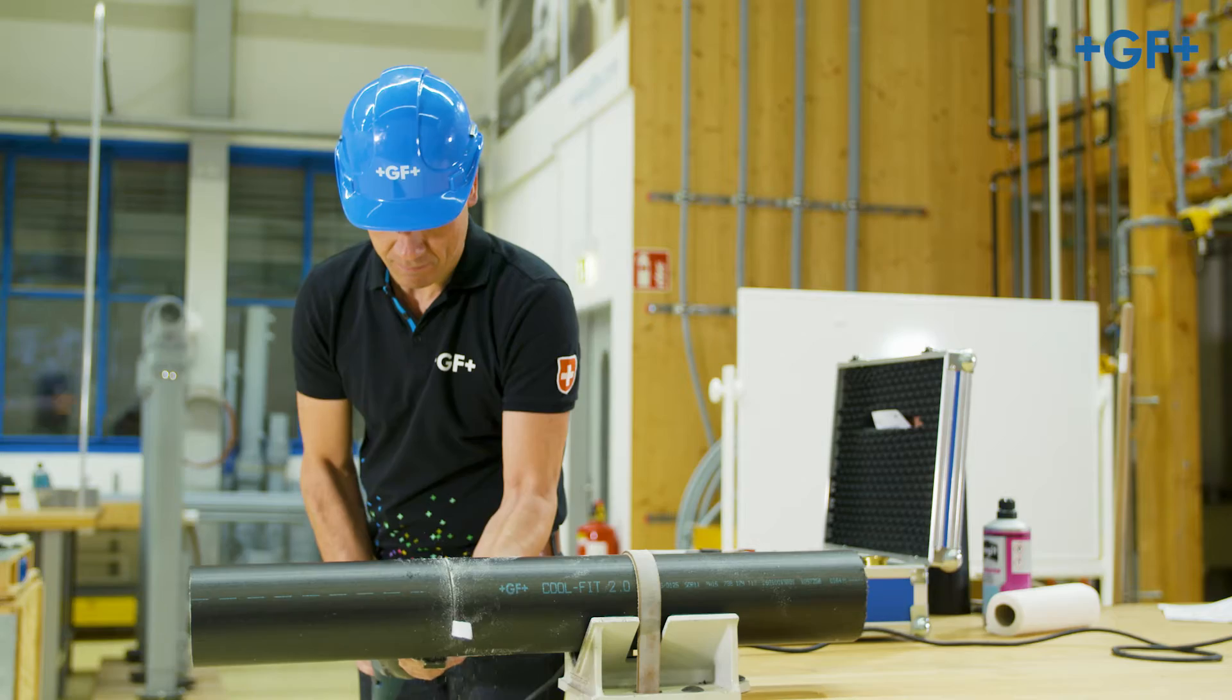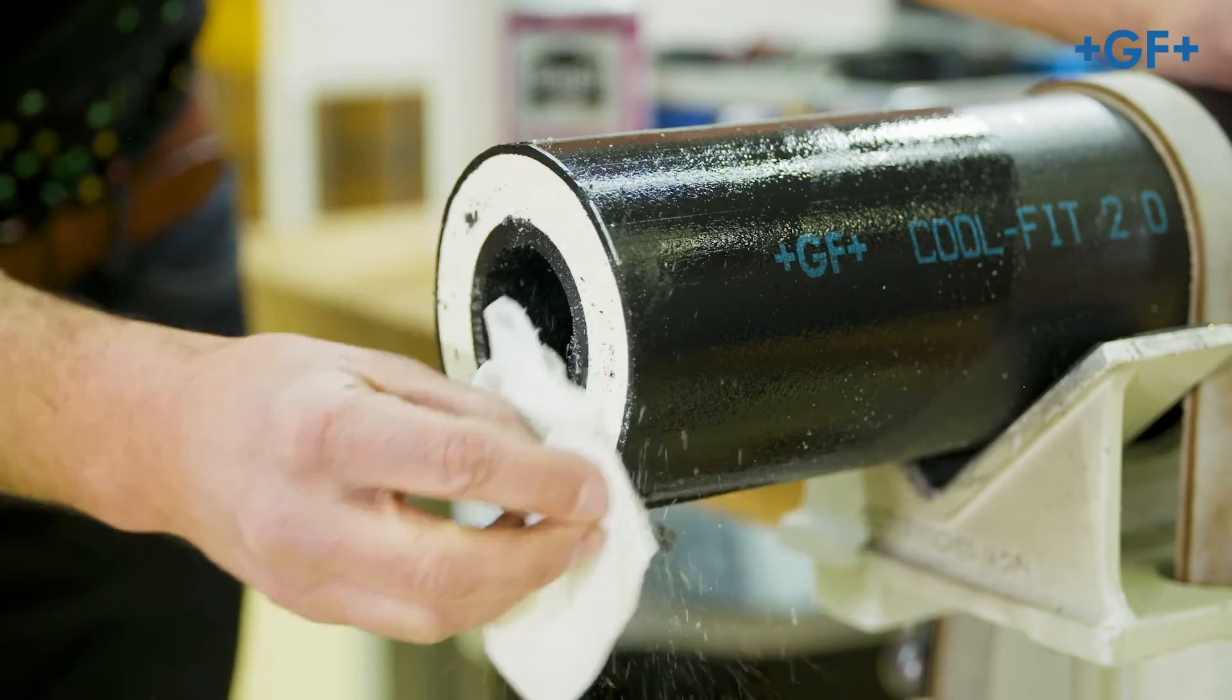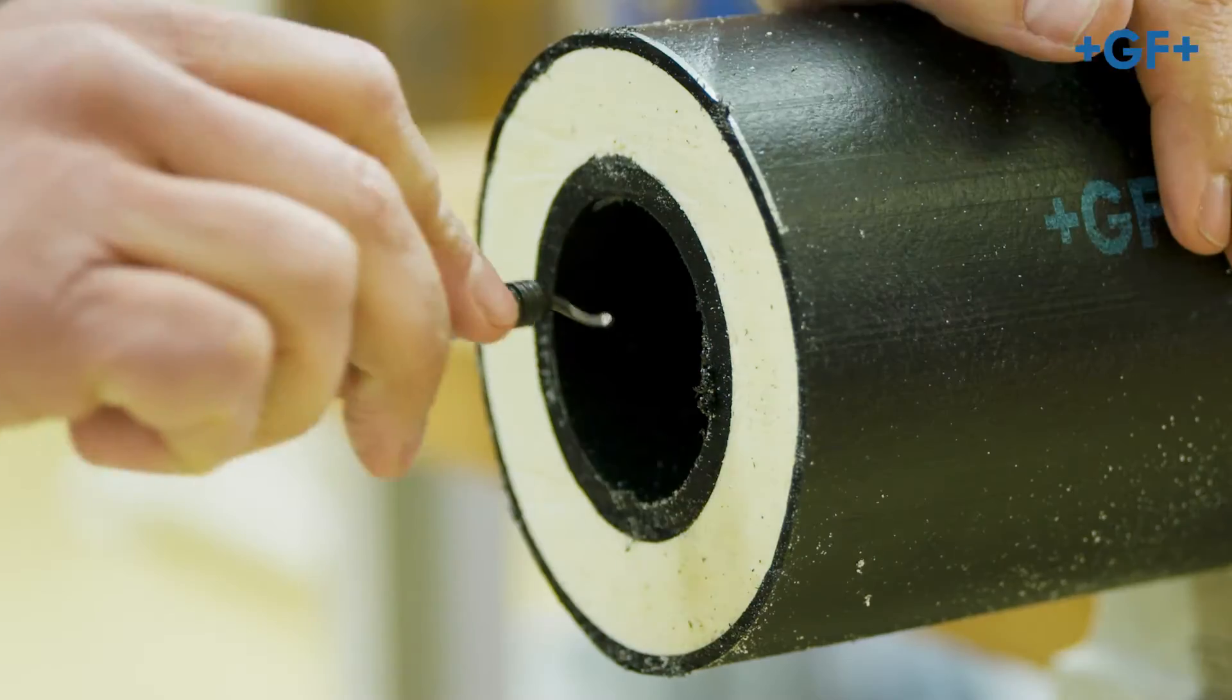Cut the CoolFit pipe at right angles. Clean the cutting surface roughly and deburr the inner pipe.